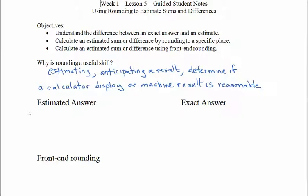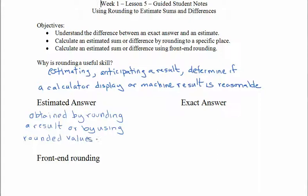An estimated answer is an answer that is obtained by rounding a result or by using rounded values in a calculation. If you're going to give someone an estimated answer, it's important that they know that that's what they're getting. So we would use words like about, or approximately, or maybe the symbol approximately, the two little squigglies, like an equals on top of each other. But we want to let people know that what they're getting is not actually exact.